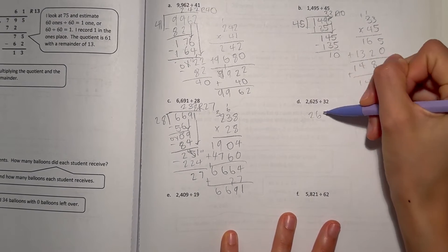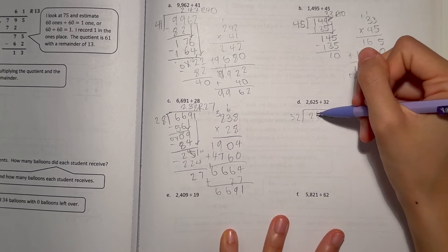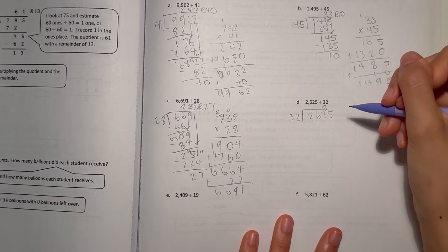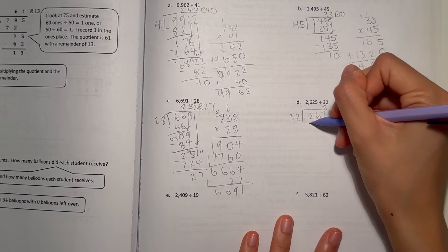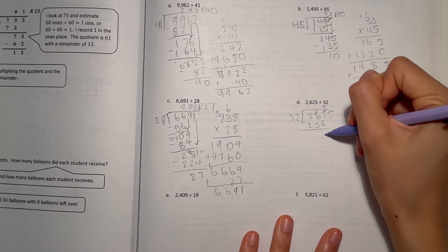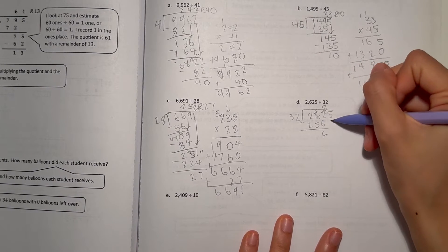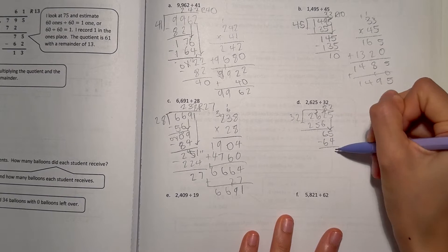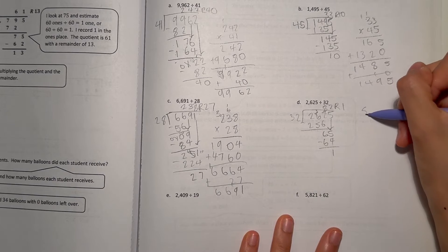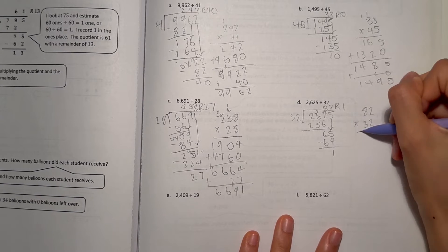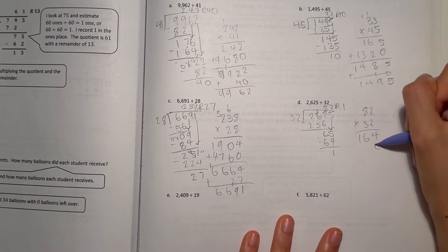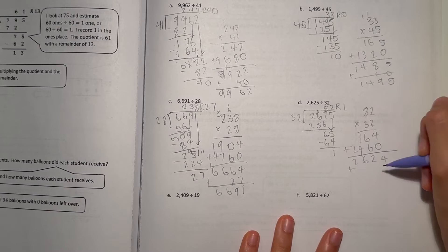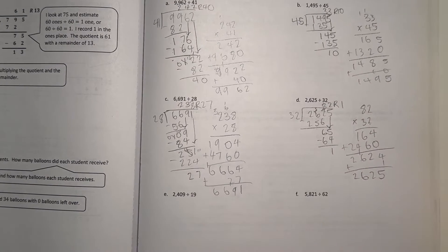Now Part D: 2,625 divided by 32. 32 can't go into 26, so we look at 262. 32 can go 8 times into that, which is 256. 12 minus 6 is 6, 5 minus 5 is 0. Bring down the 5, making 65. 32 can go 2 times — 64 — with 1 left over. So 82 remainder 1. Checking: 82 times 32 gives 2,624 plus remainder 1 is 2,625. Correct!